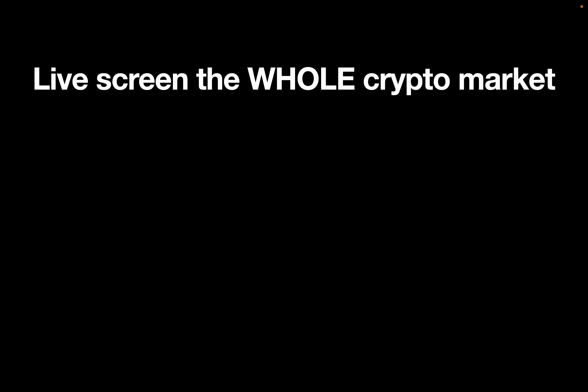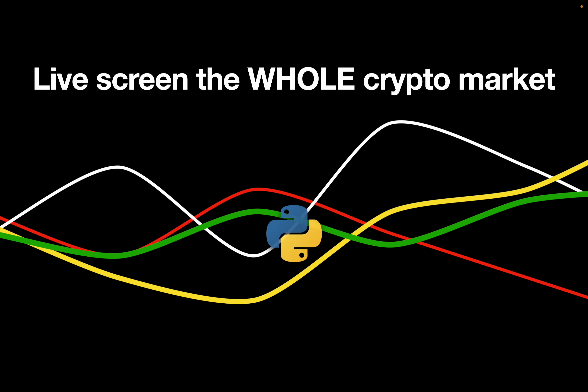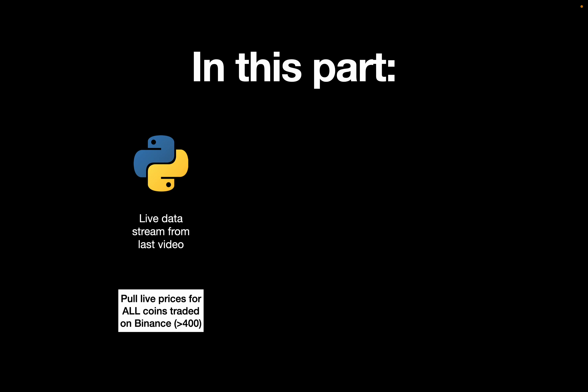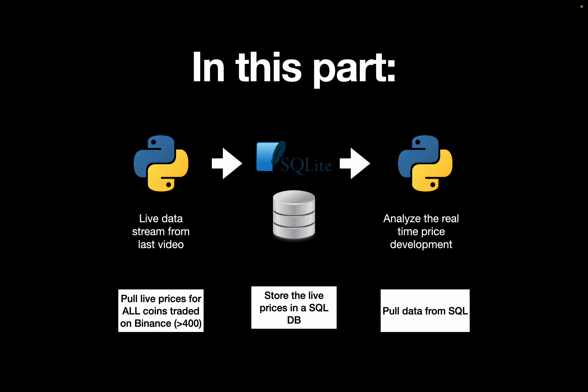Hello and welcome to the second part of live screening the whole crypto market with Python. In this part we are going to utilize the live data stream from the previous video, so be sure that you have watched that. We are going to store this in the simplest form of a database which is integrated in Python — SQLite. After we did that, we are going to pull and do some basic analysis of the live data. It is going to be exciting.